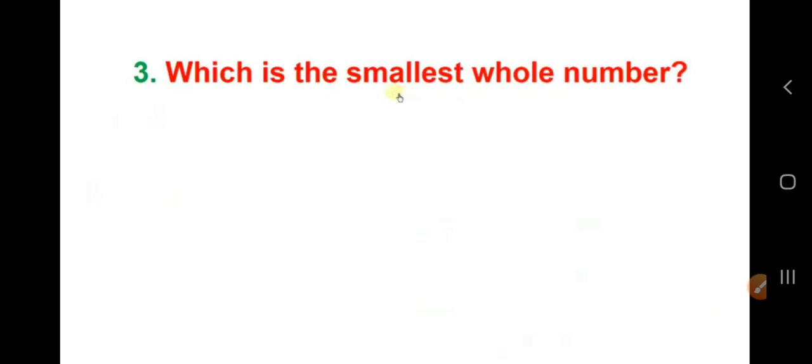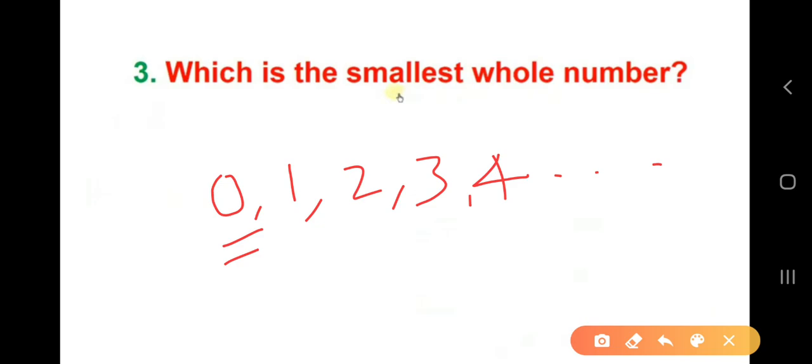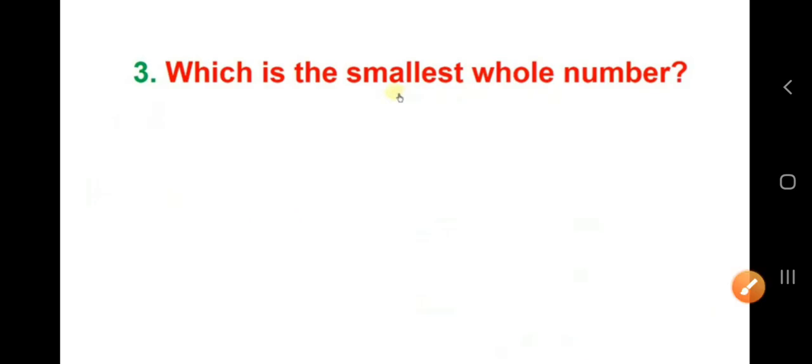Which is the smallest whole number? Whole number starts from 0. 0, 1, 2, 3, 4 and it goes on. So, from which number it starts? It is 0. So, 0 is the smallest whole number. You can write in the notebook. 0 is the smallest whole number. Now, let us go to next question.